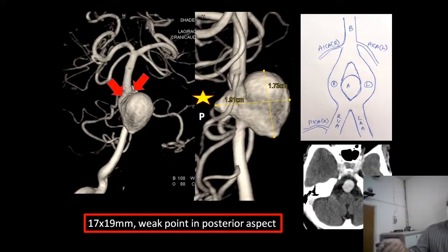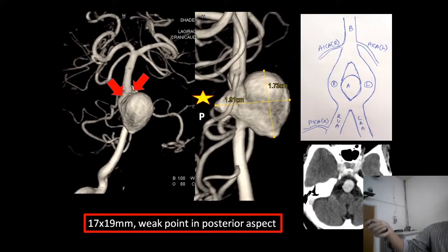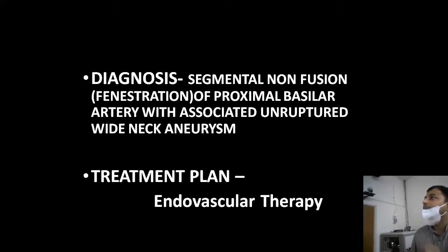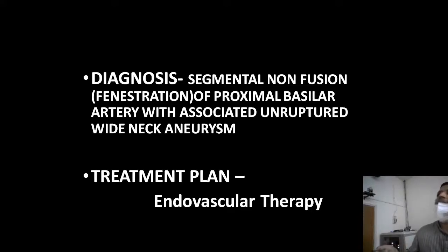This is a diagrammatic representation of the AP view. The right and left vertebral arteries meet at the vertebrobasilar junction. Instead of a single-channel basilar artery, we see two limbs — the right and left limbs of the fenestration — with the aneurysm located in between. CT images confirm a completely filling aneurysm. The complete diagnosis is segmental non-fusion or fenestration of the proximal basilar artery with an associated wide-neck aneurysm — essentially an embryological mishap.